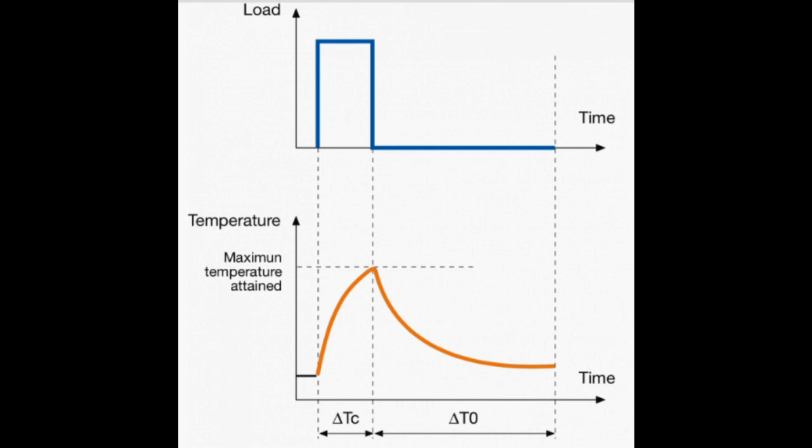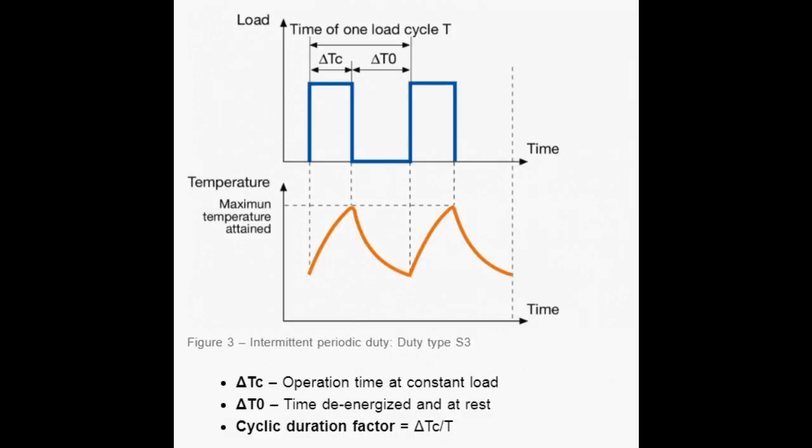Second comes the short time duty or S2 type. The operation is done at constant load only for a given time. The time is defined such that suppose it is written S2 40 minutes, you can operate the machine for 40 minutes. After that, you have to de-energize the machine up to the time the temperature reaches the ambient temperature. Once the temperature reaches room temperature, then only you can re-energize the machine.